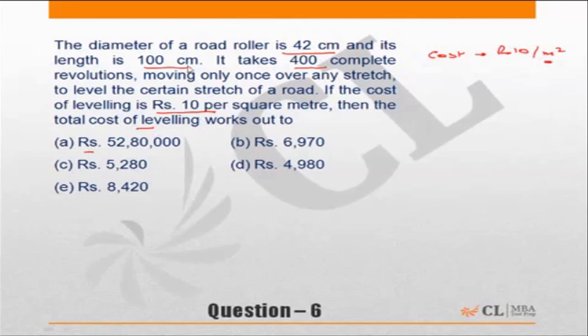be better to convert the centimeters into meters. So the diameter of the road roller is 0.42 meters and the length is 1 meter. This will ensure that there is no discrepancy which creeps in due to mixing centimeters and meters.